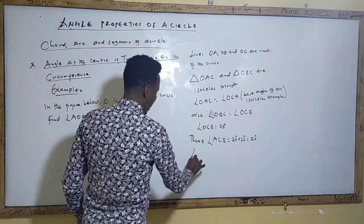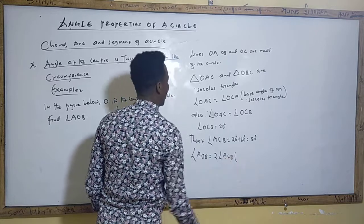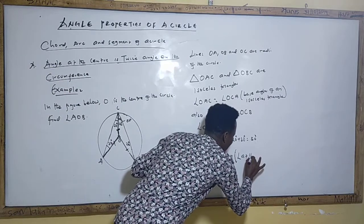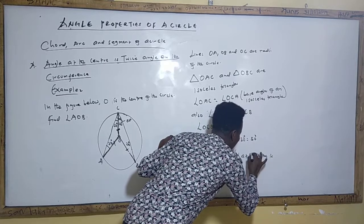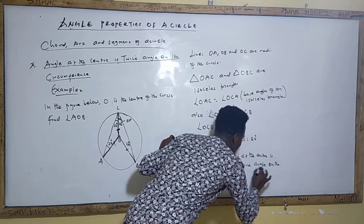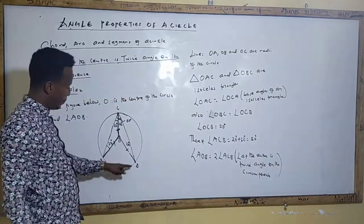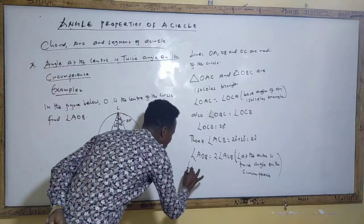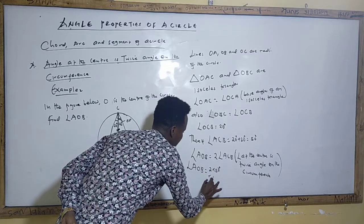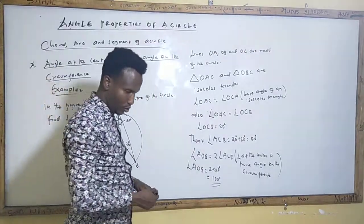Therefore angle AOB equals 2 times angle ACB, because angle at the center is twice angle on the circumference. So angle AOB equals 2 times 50°, which gives us 100°. That is the final answer.